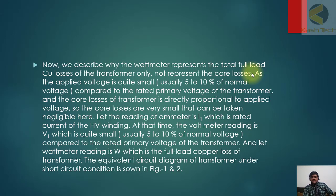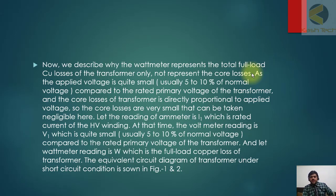Although we might expect core losses to appear, the wattmeter reads only copper losses because the applied voltage is quite small — usually five to ten percent of the normal rated primary voltage of the transformer. Since core losses are directly proportional to the applied voltage, the core losses are very small and negligible. The ammeter reading is I1, which is the rated current of the HV winding. The voltmeter reading V1 is quite small compared to the rated primary voltage, and the wattmeter reading W gives the full load copper loss of the transformer.